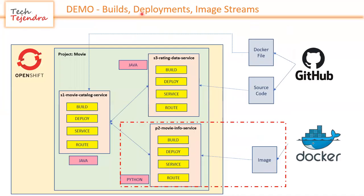As shown in my earlier video, we will deploy a full application with three microservices. Two microservices are developed in Java using the Spring framework, and one microservice is developed in Python. We will create a project inside the OpenShift cluster named 'movie', and in this tutorial part we will cover deploying the Python application — the p2 movie info service.